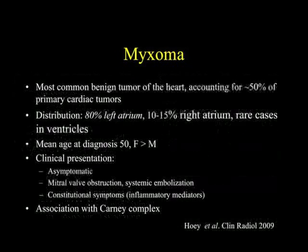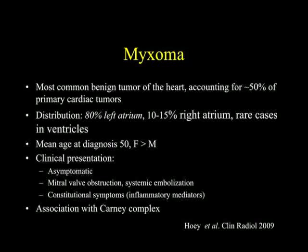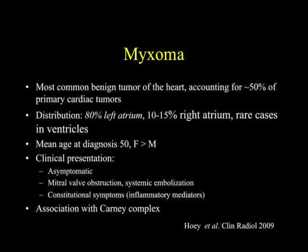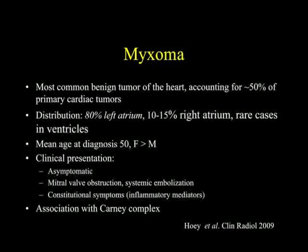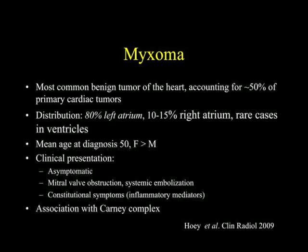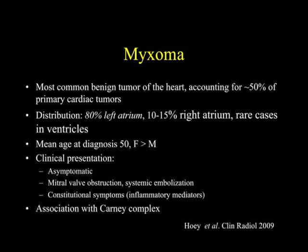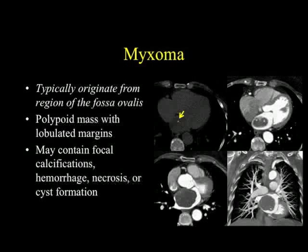Myxomas are the most common benign tumor of the heart, accounting for up to half of primary cardiac tumors. About 80 percent are in the left atrium, 10 to 15 percent in the right atrium, with rare cases in the ventricles. Mean diagnosis is at age 50, with females more common than males. Presentation is very variable — patients can be asymptomatic or incidentally found on chest CT. It can present with mitral valve obstruction, systemic embolization, or constitutional symptoms. It is associated with Carney complex, though that is typically uncommon. Location is very important — it typically originates from the region of the fossa ovalis.